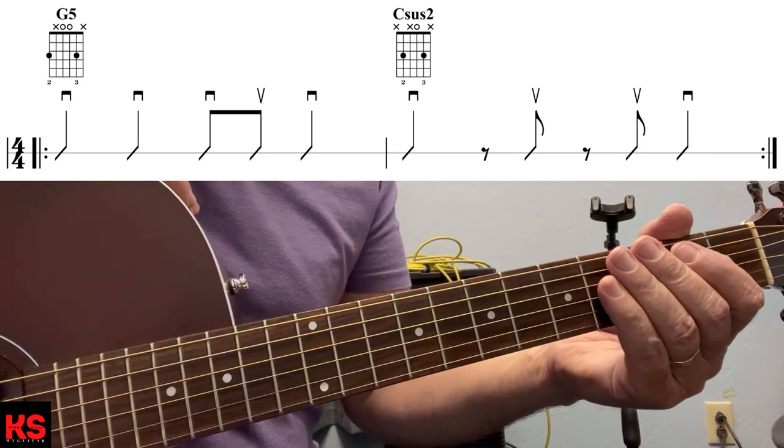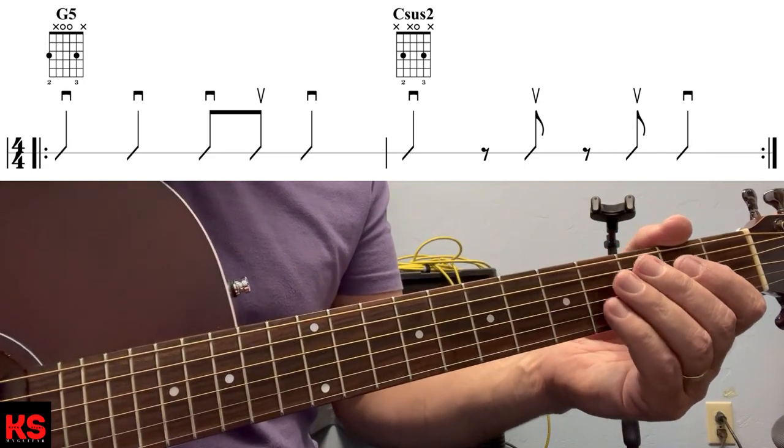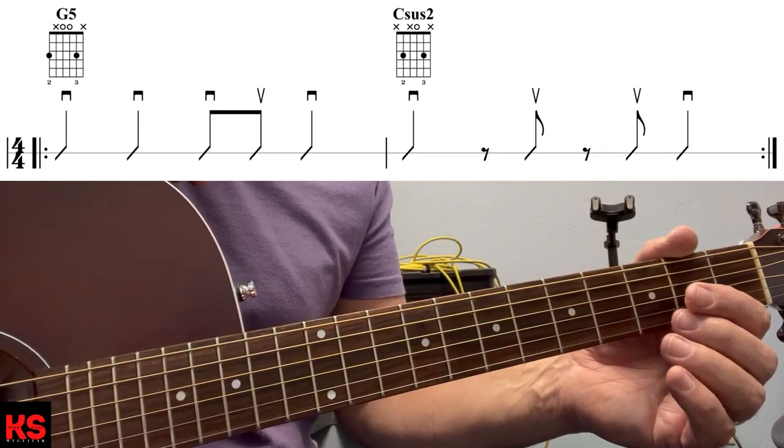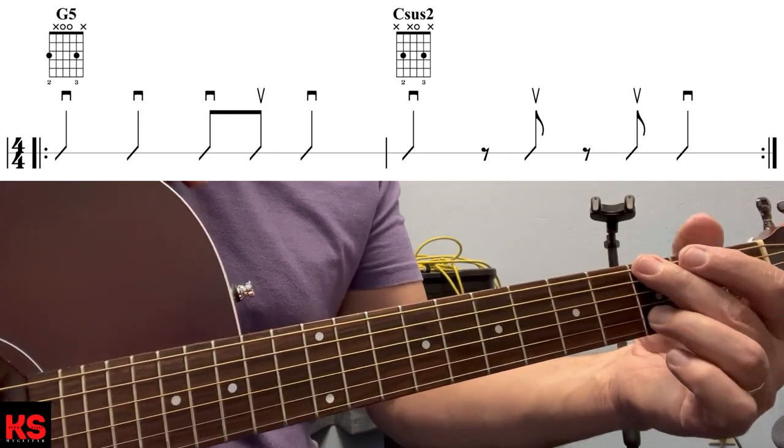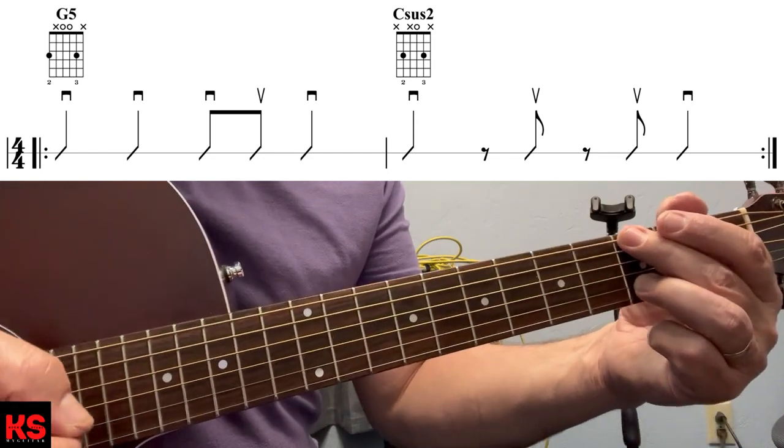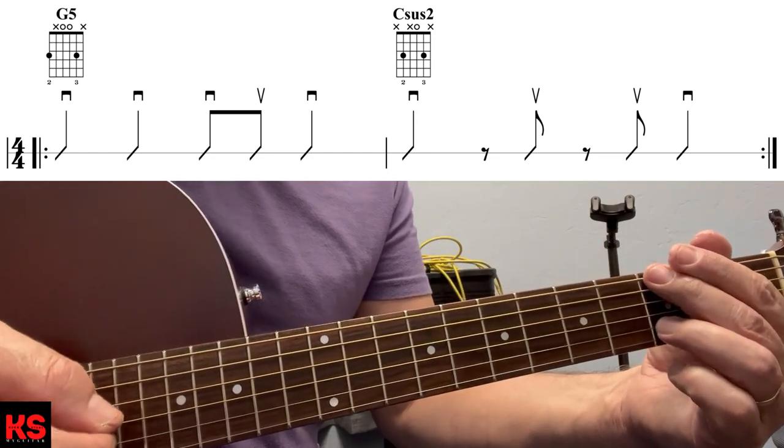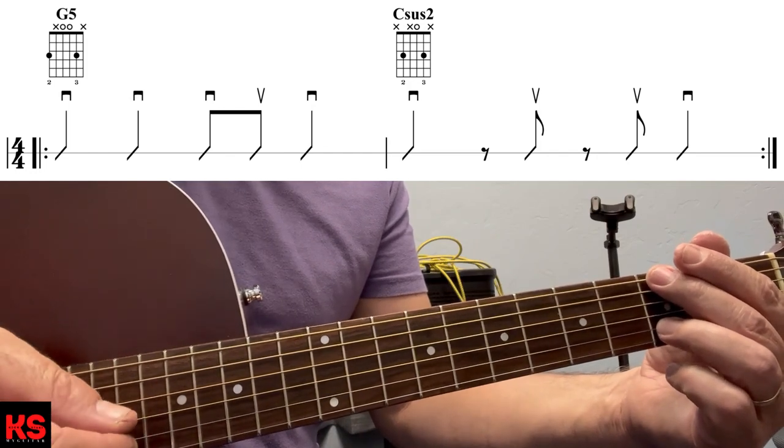All right, so now let's try the rhythm combinations. We're going to go from the straight rhythm to the syncopated rhythm. Again, with the same chords, G5 to Csus2. Here's number one, rhythm combinations. One, two, three, four.